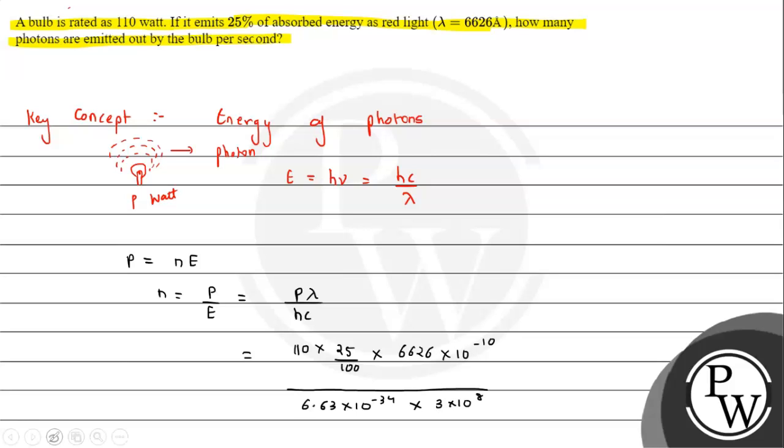Now we solve for the final answer. The number of photons emitted per second equals 110 × 1/4 = 27.5, multiplied by 6626, giving 1.82 × 10^5. Combined with 10^-10 from the angstrom conversion, we divide by h×c, which is 19.89 × 10^-26.